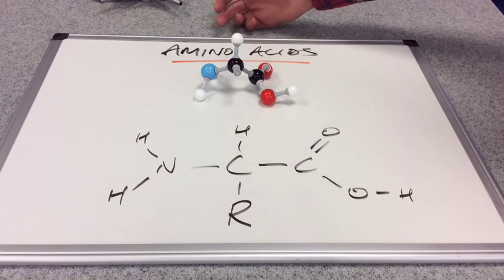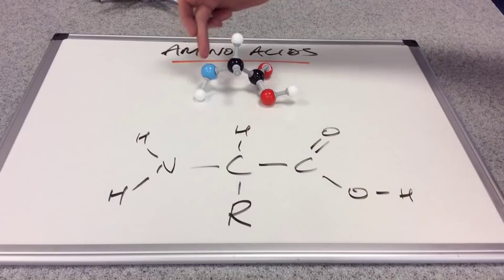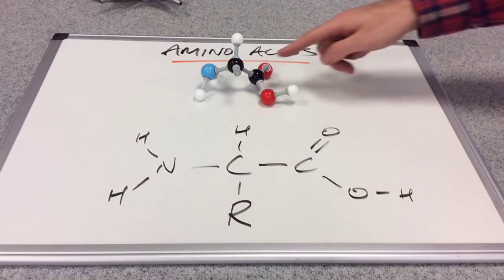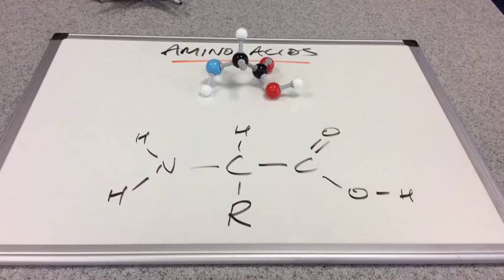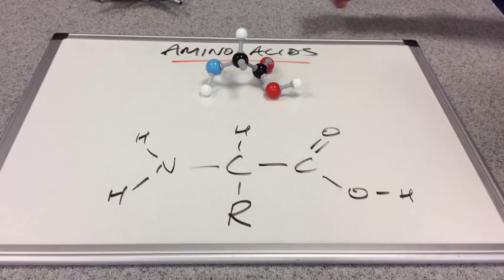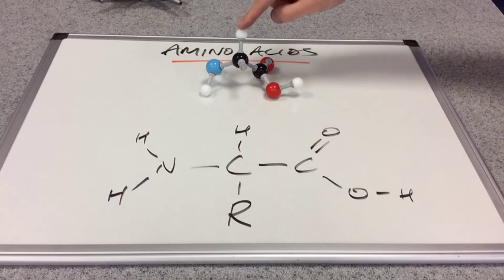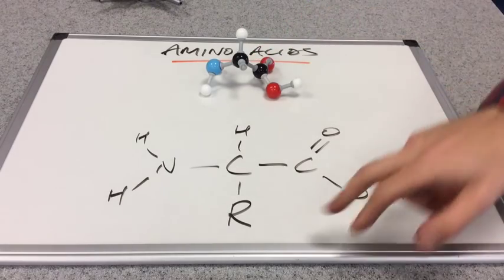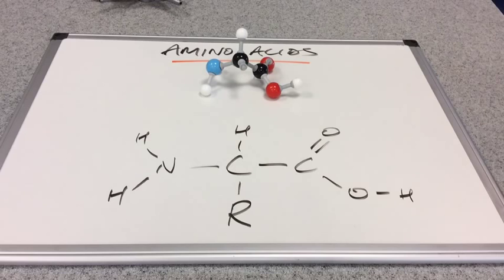So why are they called amino acids? Well we've got an amino group, so there's the NH2 group here, and we've also got an acid group, so there's the COH group there. As well as these two functional groups, the amino group and the acid group, we've also got a hydrogen bonded to this carbon, and we've got a variable R group, so that's why I haven't put anything on there.